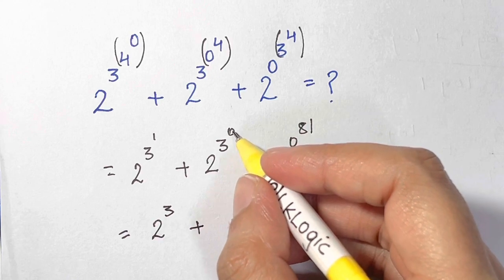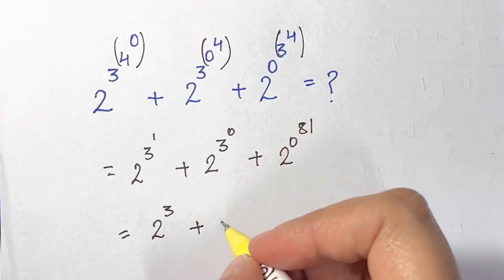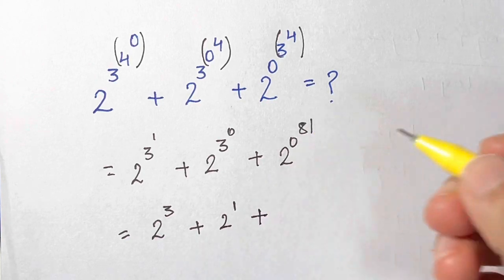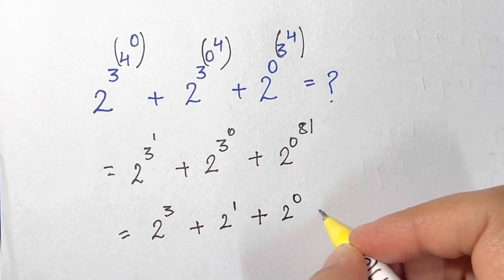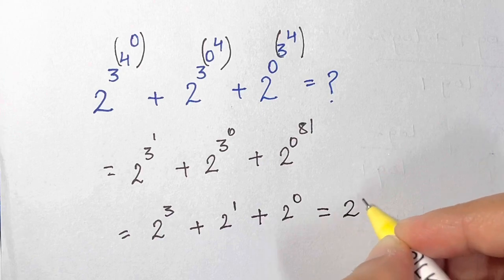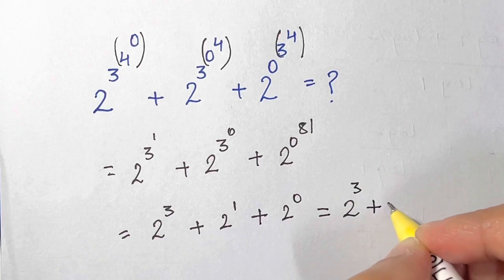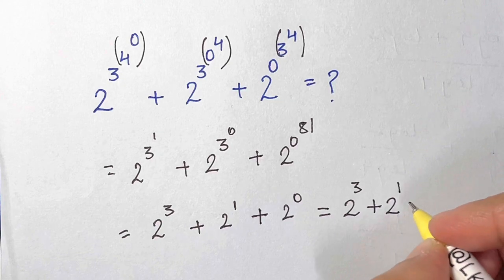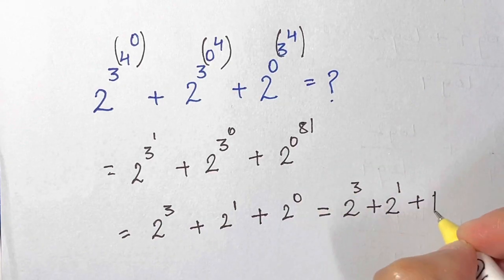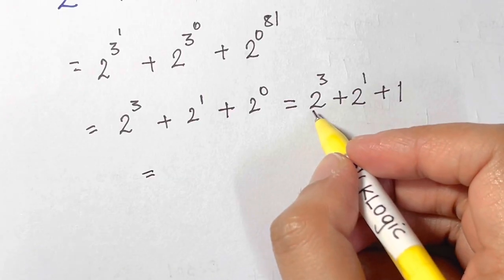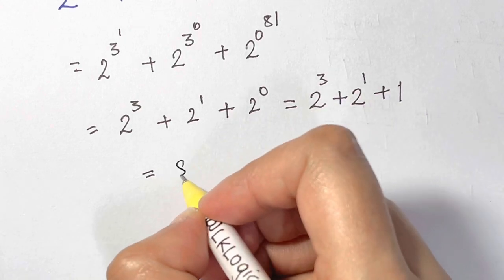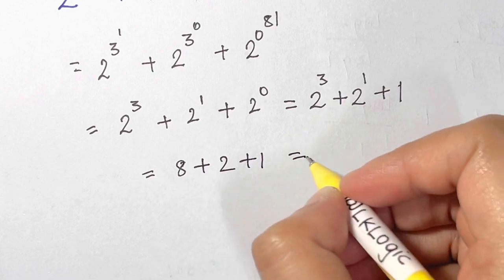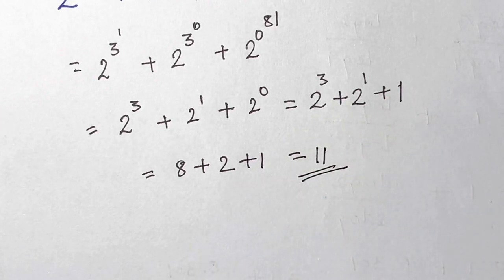3 to the power of 0 — anything to the power of 0 is 1. So we have 2 to the power of 3, plus 2 to the power of 1, plus anything to the power of 0 is again 1. So that gives us 8 plus 2 plus 1, which equals 11 — and that's your answer.